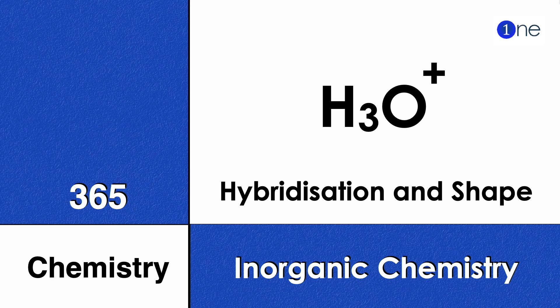Welcome to One Chemistry. This is the 365 Chemistry series - Inorganic Chemistry questions for you. Here they've given hydronium ion H3O+. You should find the hybridization and shape of it.